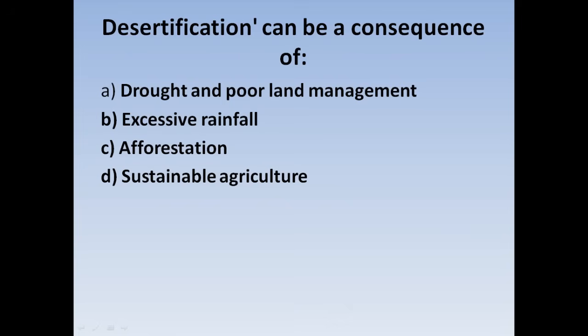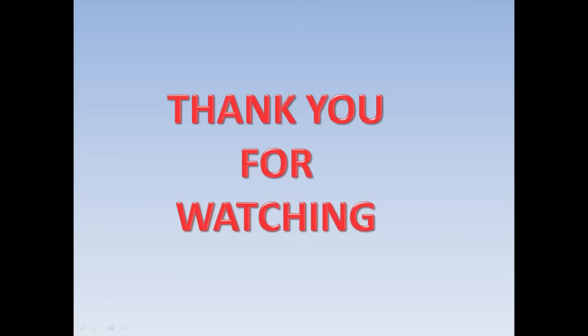Next question: Desertification can be a consequence of — Option A: Drought and poor land management, Option B: Excessive rainfall, Option C: Afforestation, Option D: Sustainable agriculture. Desertification is a result of drought and poor land management. Correct answer: Option A. This concludes the multiple-choice questions for this Environmental Science session.